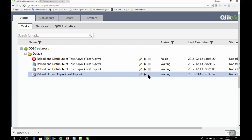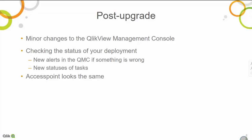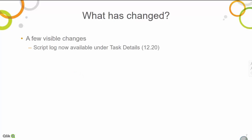Up front, everything looks pretty much the same — the access point looks the same as in older releases. The script log is now available in task details, introduced in 12.20 (not present in 12.10). Tasks now also show which document they are associated with: previously you would just see a task name, but now within parentheses, you also see the document name that the task reflects upon.